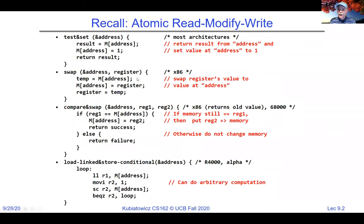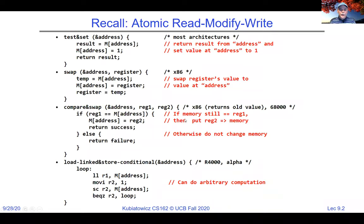We talked about how to make locks using test-and-set. Swap is similar — you grab a value and store something else atomically. Compare-and-swap takes what's in memory, and if it matches one thing, stores something else. Swap and compare-and-swap are available on architectures such as x86. There's a version of compare-and-swap that returns the old value rather than success or failure.